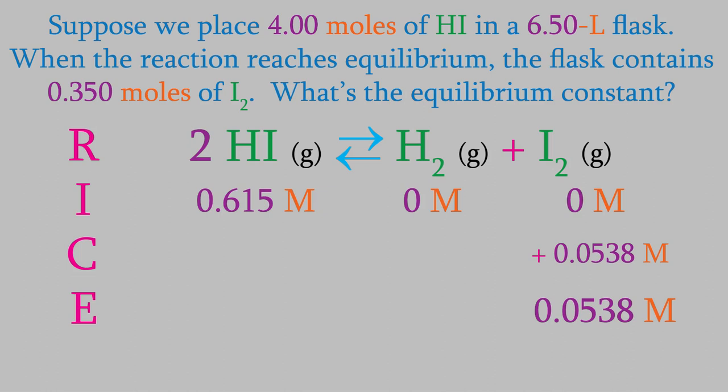The change in iodine concentration is positive 0.0538 molar. Since the iodine and hydrogen are in a 1 to 1 ratio, that means the hydrogen concentration also changes by 0.0538 molar. Iodine's in a 2 to 1 molar ratio with HI, so the HI concentration changes by twice as much as the iodine. So it changes by 0.108 molar. Since it's on the opposite side of the reaction, the HI concentration decreases by this amount.